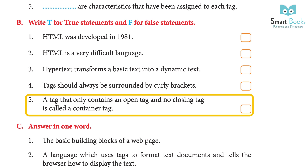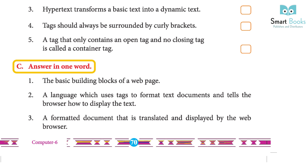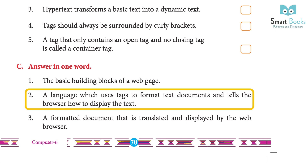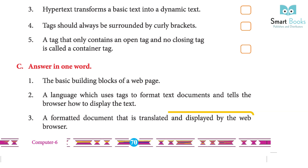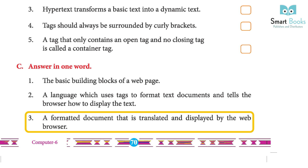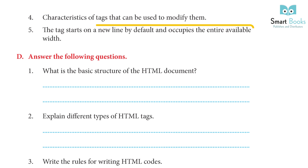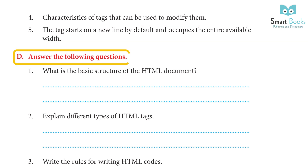True/False continued: 4. Tags should always be surrounded by curly brackets – False. 5. A tag that only contains an open tag and no closing tag is called a container tag – True. Answer in one word: 1. The basic building blocks of a web page – Tags. 2. A language which uses tags to format a text document and tells the browser how to display the text – Markup language. 3. A formatted document translated and displayed by the web browser – HTML. 4. Characteristic of tags used to modify them – Markup tag. 5. The tag that starts on a new line and occupies the entire available width – Block level tag.